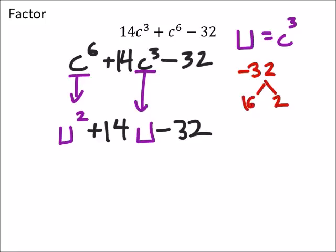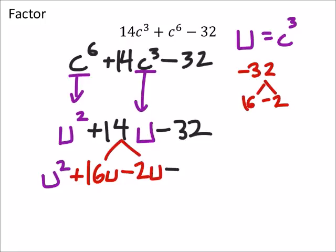And one that comes to mind first is 16 and 2, 16 and negative 2 specifically, because when I add those up I get 14u. So 16u minus 2u here, we still got u squared plus that 16u minus 2u minus 32. Now I can factor by grouping.